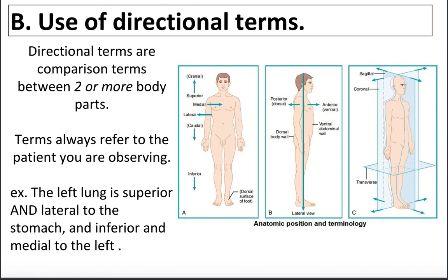Another thing about the anatomical position is that these are comparison terms. You don't just say 'your eyes are anterior' — anterior means in the front, facing or more towards the front. Saying 'my eyes are anterior' is actually meaningless without a reference, because my nose is actually more forward than my eyes. So my eyes are not anterior to my nose, but my eyes are anterior to my brain. All directional terms are comparison terms — you use them in reference to something else, sometimes the midline, or a different body part.